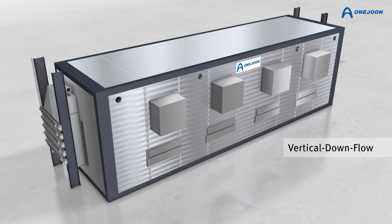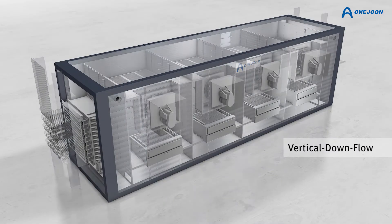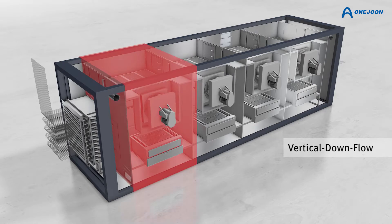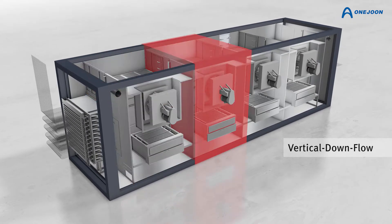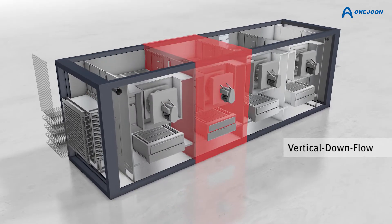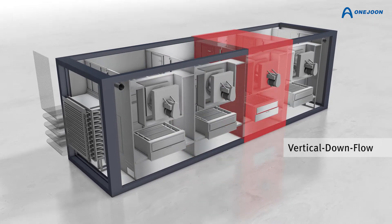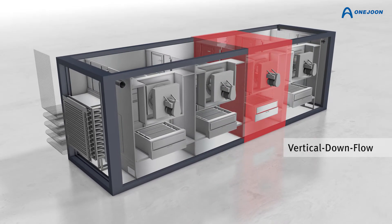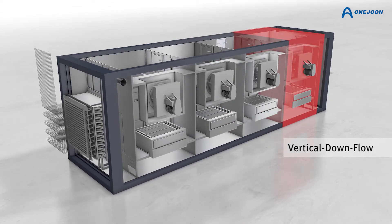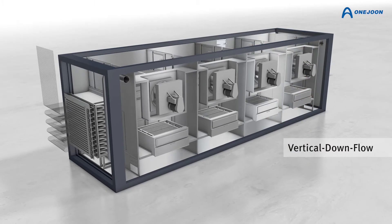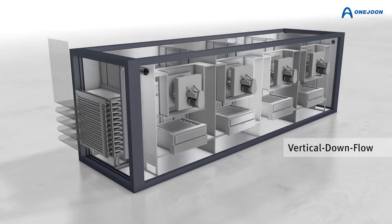Each modular oven includes multiple controlled zones — four in this case. This approach provides consistent airflow to uniformly remove the heat generated from the fiber band during the oxidation process.